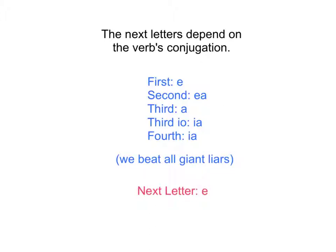And we can remember this using the easy mnemonic device: we beat all giant liars. If it's first conjugation — 'we' — this tells us we use E. If it's second, 'beat' gives us EA. If it's third, we use A from 'all'. If it's third IO, we use IA from 'giant'. And if it's fourth, we use IA from 'liars'. We beat all giant liars — it must go in that order: first, second, third, third IO, and fourth. We only use the vowels: E, EA, A, IA, and IA.